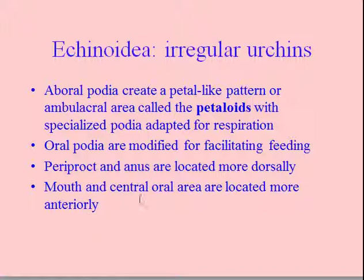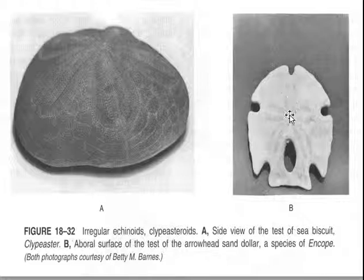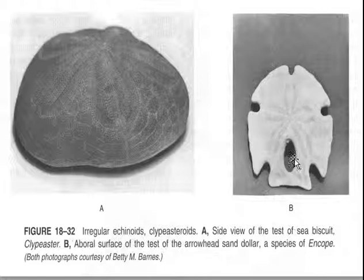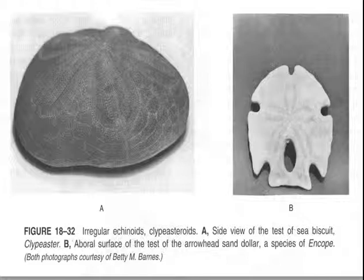Irregular urchins still show pentamerous radial symmetry, but they've been elongated along a central axis making them secondarily bilaterally symmetrical. If you cut along one axis, both sides mirror each other — but that's secondary. You can still see the pentamerous radially symmetrical origins. Because these animals are directional when moving through substrate, it has benefited them to elongate and become secondarily bilaterally symmetrical.